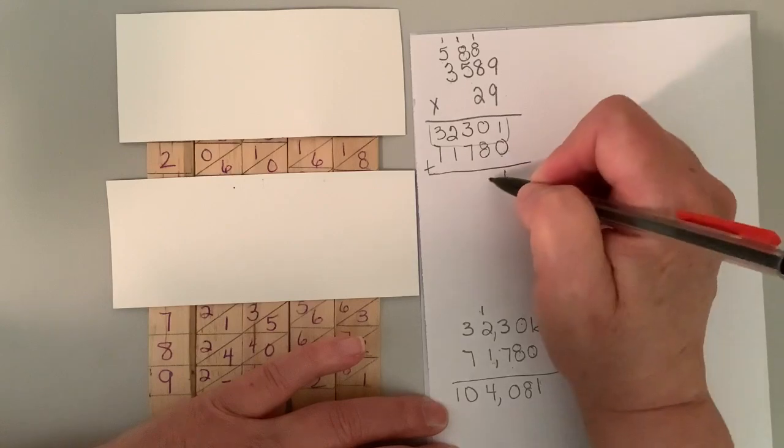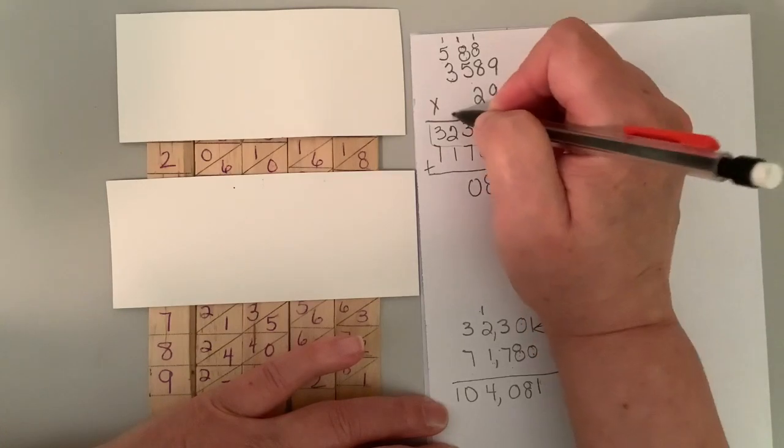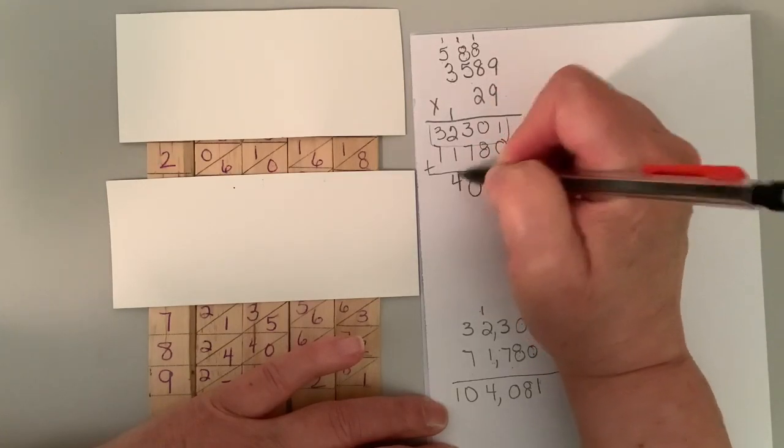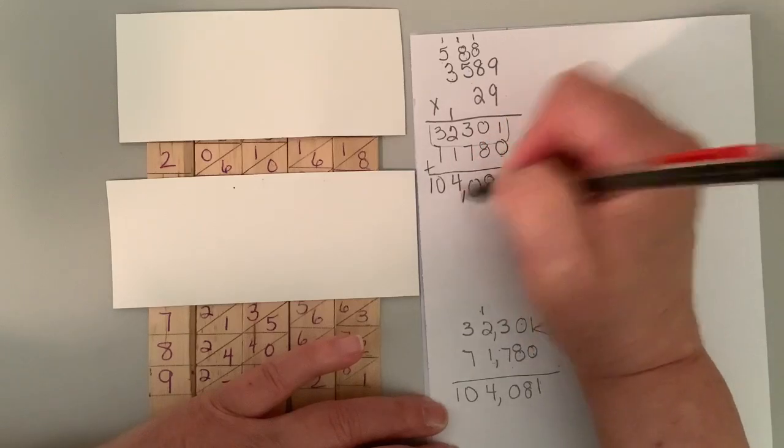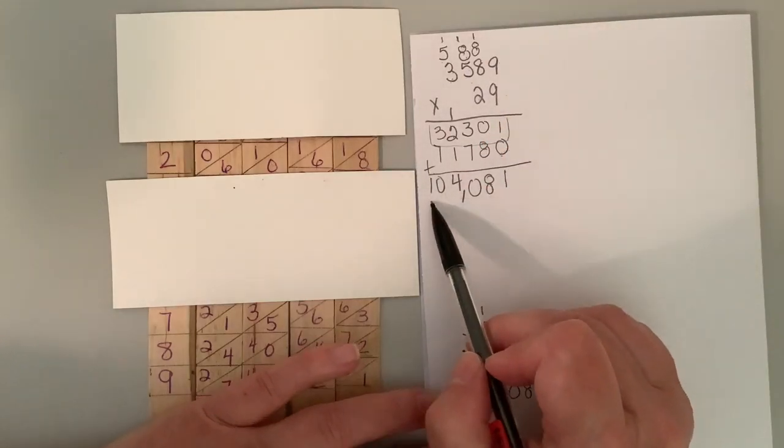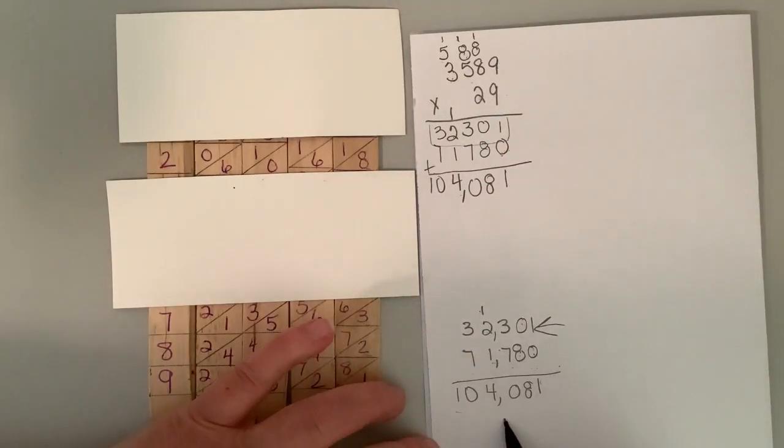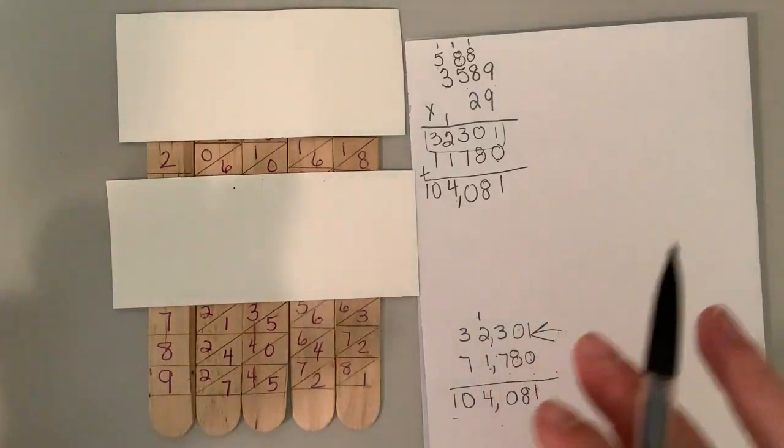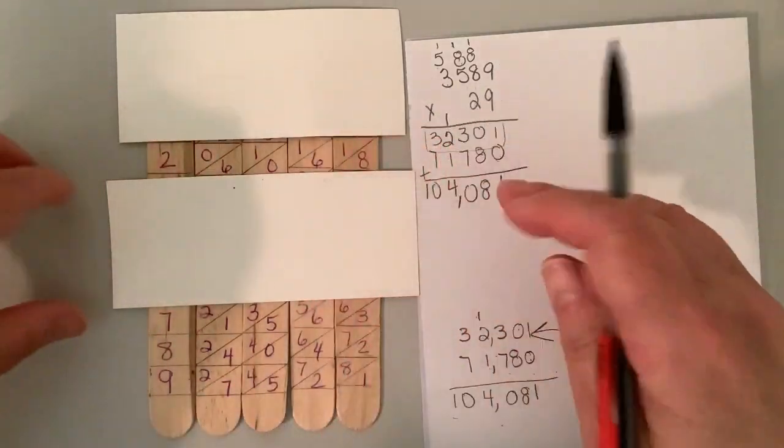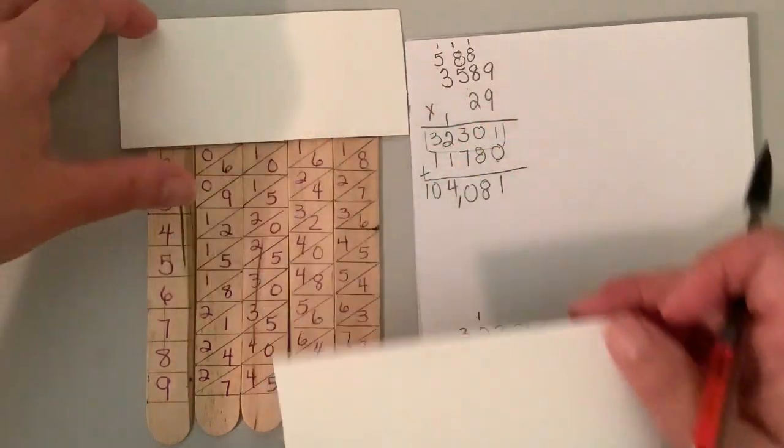Then we just add them up. That's four is 10. And we get 104,081, 104,081. So Napier's rods is essentially the distributive property.